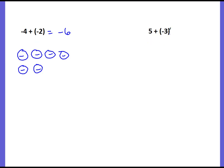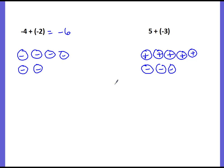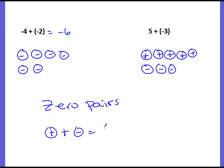In our second example, we have 5 plus negative 3. We start with our first integer, positive 5, drawing five positive integer chips. Our second integer is negative 3, so starting on the second row, I draw three negatives, keeping chips lined up. They're not all the same — we have positives and negatives. We talked about zero pairs: a positive combined with a negative cancels out, making zero. We loop all zero pairs and pull them out, and we're left with two positives. So 5 plus negative 3 equals positive 2.